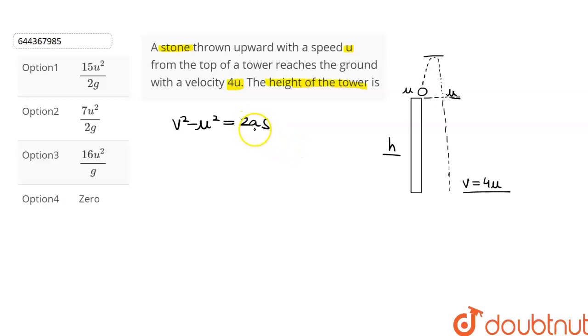In this case, acceleration will be equal to the acceleration due to gravity, and the distance travelled s will be equal to the height of the tower.